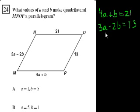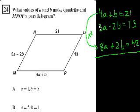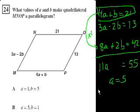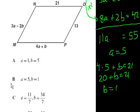Let's cancel out the B's by multiplying the top equation by 2, giving 8A plus 2B equals 42. Adding the two equations: 3A plus 8A is 11A, the B's cancel out, giving 11A equals 55. Divide both sides by 11 — A equals 5. Substituting back: 4 times 5 plus B equals 21, so 20 plus B equals 21, so B equals 1. A is 5, B is 1. That is choice B.